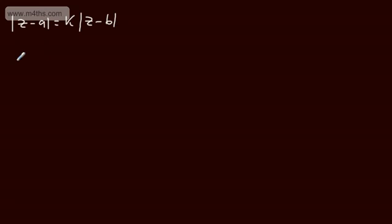In all of those cases, the value of k was equal to 1. When the value of k is equal to 1, we end up with a perpendicular bisector. When k is a real number but not equal to 1, we end up with a circle. We're going to look at those cases in this video.